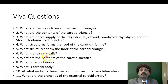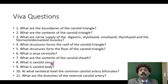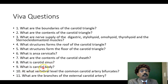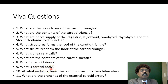Here are some viva questions we have discussed. The carotid sinus is a dilatation at the bifurcation of the common carotid artery. It is innervated by the glossopharyngeal nerve and the sympathetic nerve, and it has the capacity to sense blood pressure — so it acts as a baroreceptor. At the same bifurcation, there is a small pea-shaped body in the wall called the carotid body, which senses pH and carbon dioxide concentration of the blood, acting as a chemoreceptor.